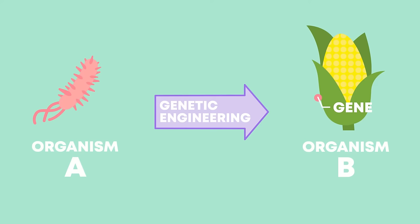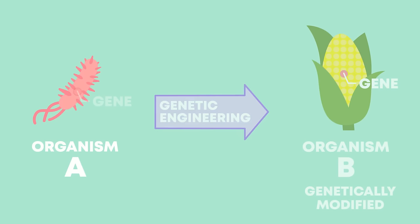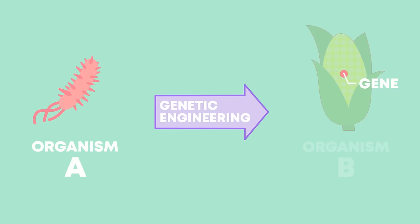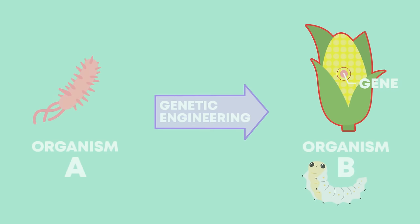An organism B can have a gene from a different organism A introduced to give it some advantage that A has naturally. Organisms like B are called genetically modified or transgenic organisms. For example, a gene that manufactures a toxic chemical in a bacterium can be introduced into a maize plant to make the plant toxic to certain insects that would eat it, such as caterpillars.